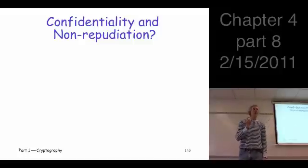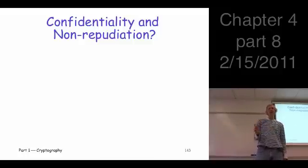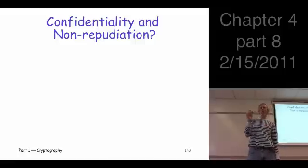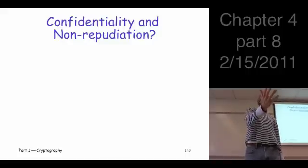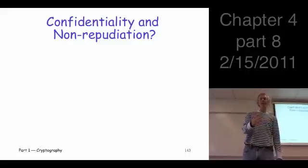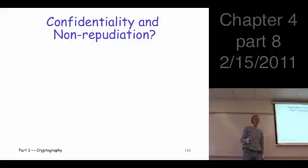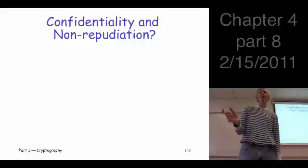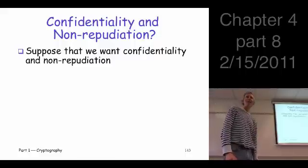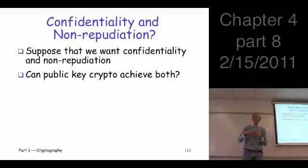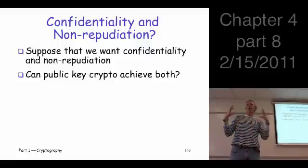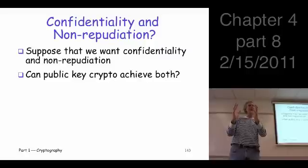So the question here is we want confidentiality and integrity, or non-repudiation. So can we get both of those using our public key system? Well, how do we get confidentiality? We encrypt. So that's a public key operation. How do we get the non-repudiation? We sign. That's a private key operation. Can we do both? Yeah, why the heck not. It's just more operations to do. So we can use our public key cryptography to do both. We would first encrypt with whichever public key we want to send to, and then we could sign with the private key to provide the non-repudiation. Or we could do it the other way. We could sign first and then encrypt.